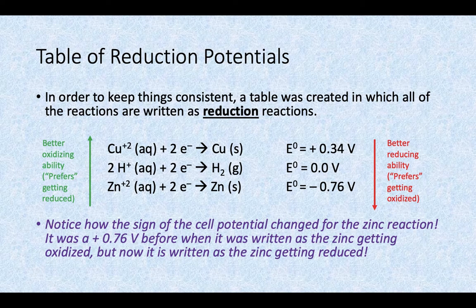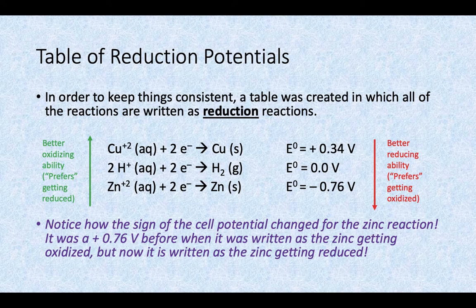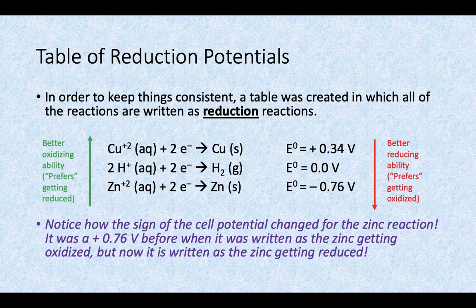Zinc ion solutions typically will not add electrons to turn into elemental zinc, and you can see the sign there is negative 0.76. That was because when the reaction was written as zinc getting oxidized, it was 0.76, but now we're having it go the other way, so the sign is flipped. Things that have positive E cell values are going to proceed in the expected reaction direction. When you have a negative E cell value, that reaction is not as likely to happen — it doesn't mean it can't, it's just not as likely, relatively speaking.